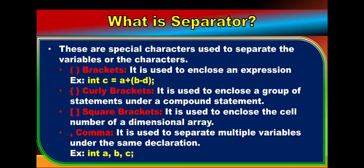Next is what is a separator. Separators are special characters used to separate variables or characters. Brackets are used to enclose an expression — for example, (b - d) means b minus d is evaluated first, then added with a. Curly brackets enclose a group of statements forming a compound statement — a class begins and ends with curly brackets. Square brackets are used to enclose the cell number of a dimensional array. Comma is used to separate multiple variables under the same declaration.